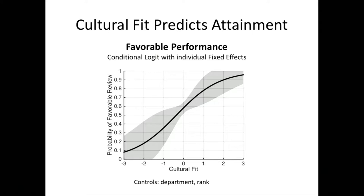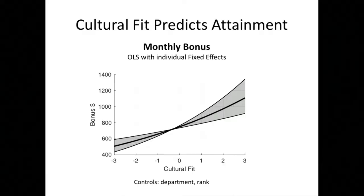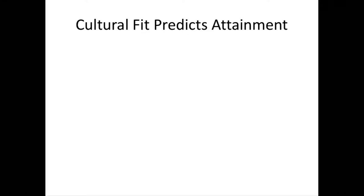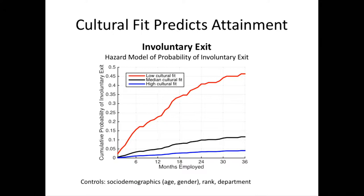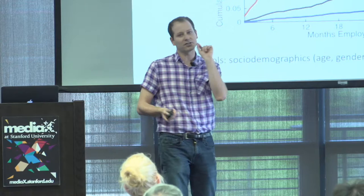Our findings are very consistent with the literature hitherto: cultural fit predicts a variety of measures of attainment in organizations. On the x-axis we see cultural fit in standard deviations. An increase from very low to high cultural fit increases the likelihood of getting a high performance evaluation by almost 90%. It increases monthly bonus by hundreds of dollars — and can be hundreds of percent of increase in income. It also predicts the likelihood of being asked to involuntarily leave. By three years, people with low cultural fit — shown here in red — have almost a 50% cumulative likelihood of being fired, derived from language use alone.